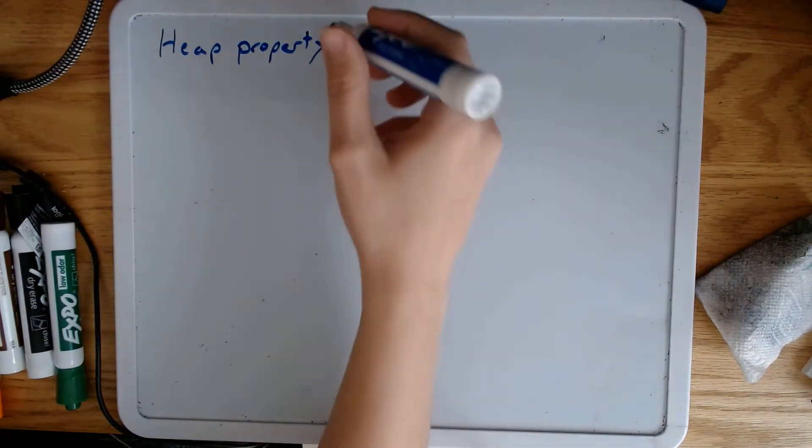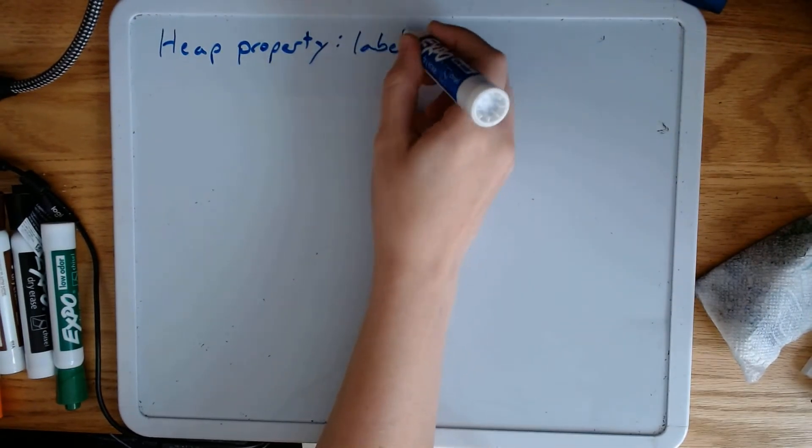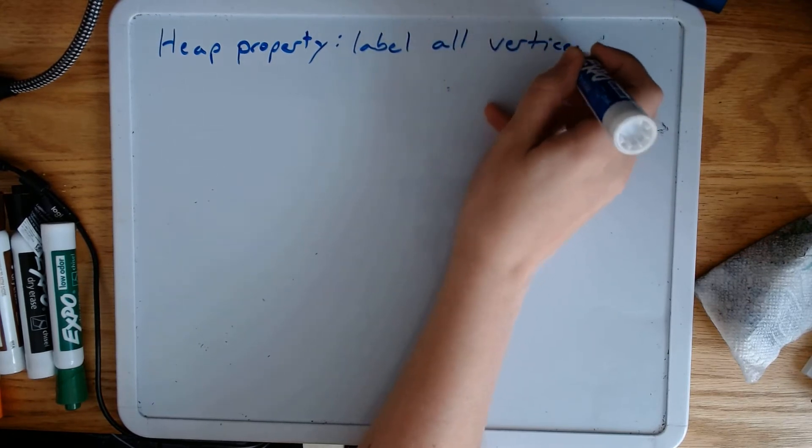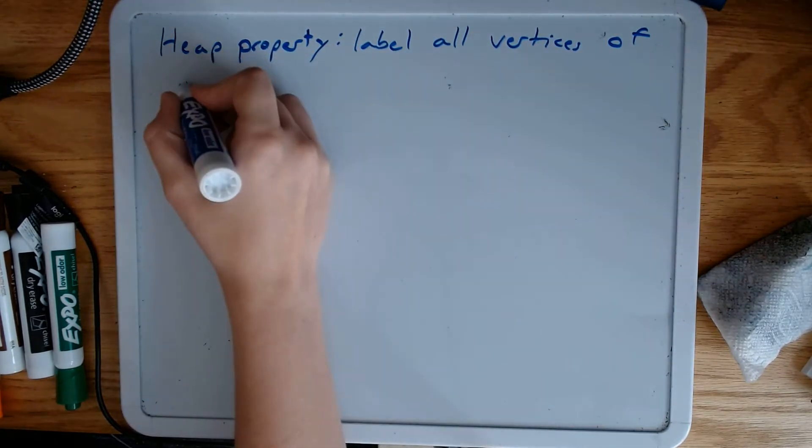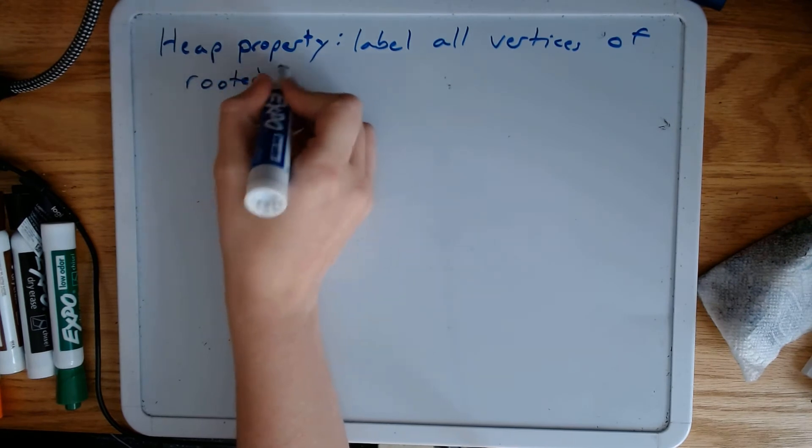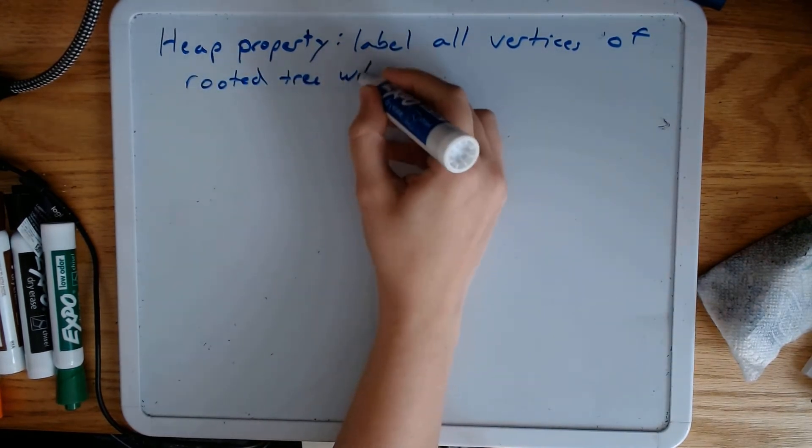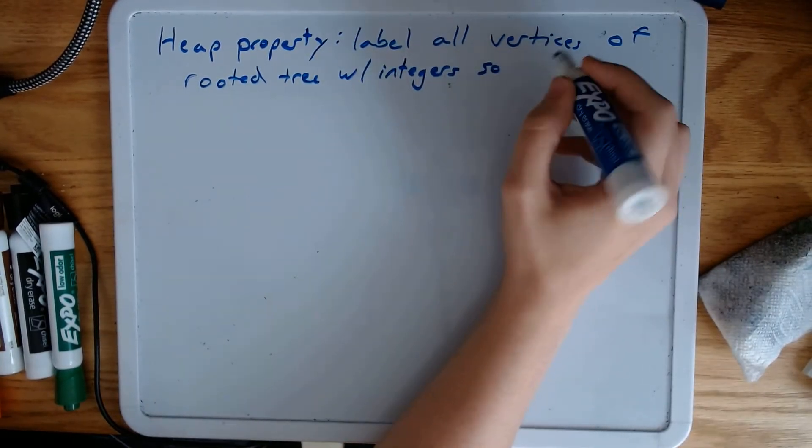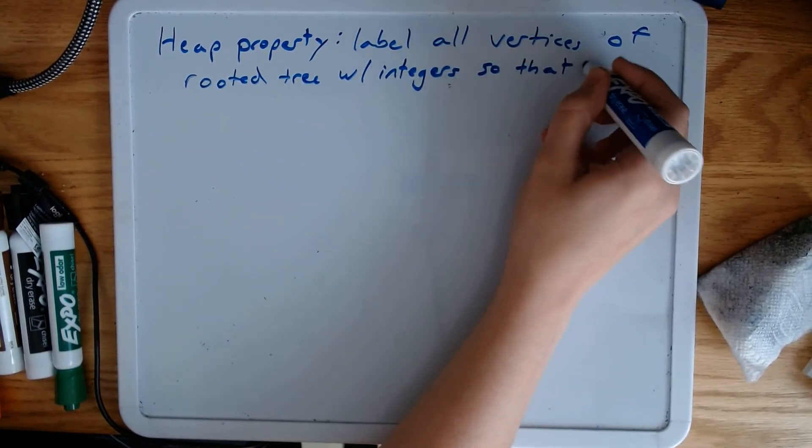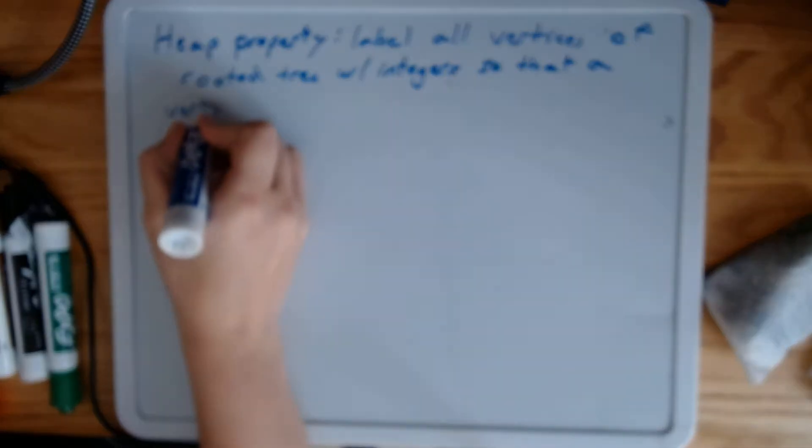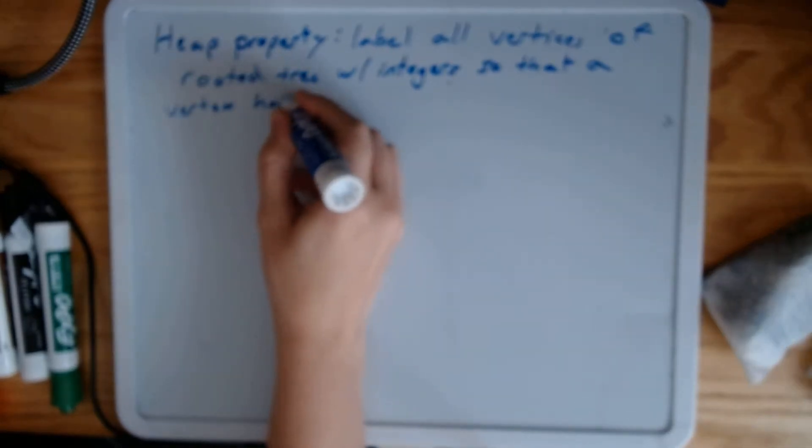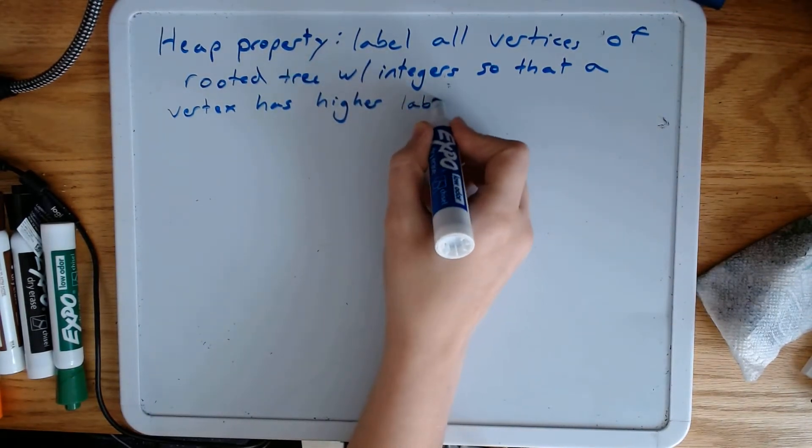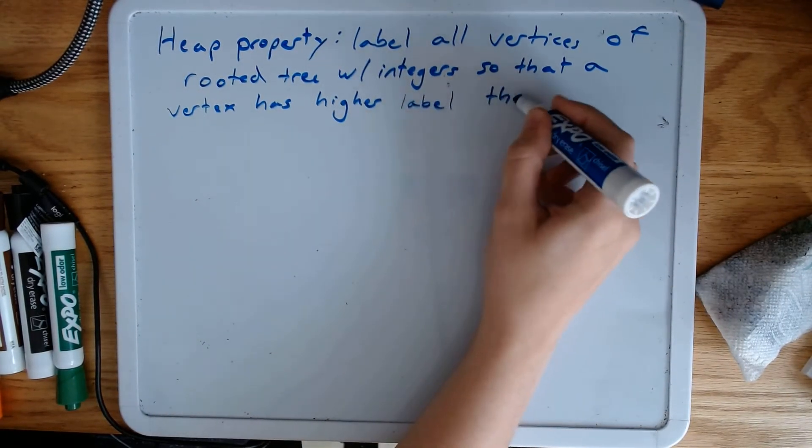In this case it says that we label all the vertices of a rooted tree with integers, so that a vertex has a higher label than its children do.